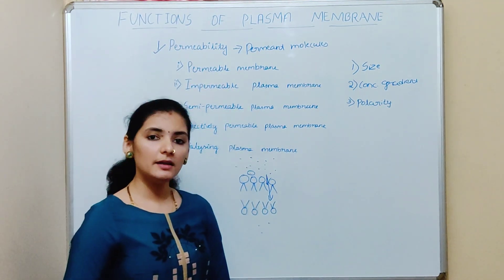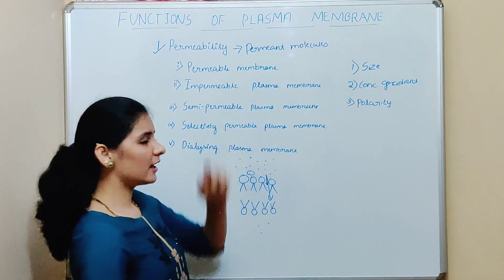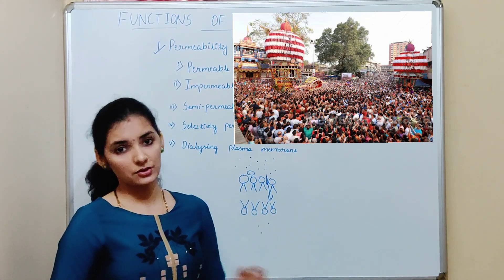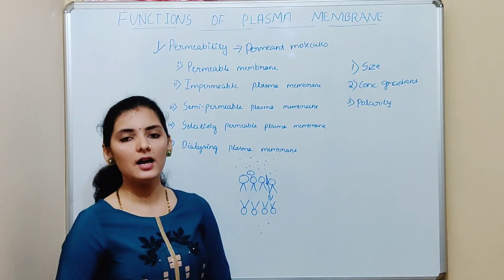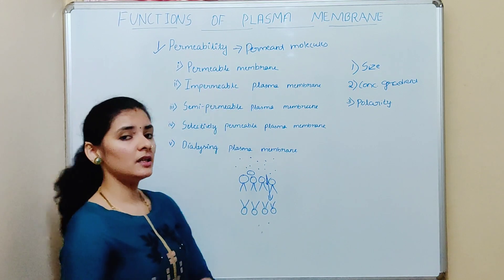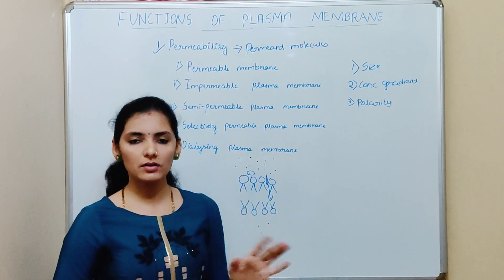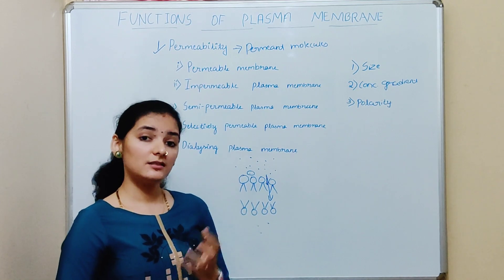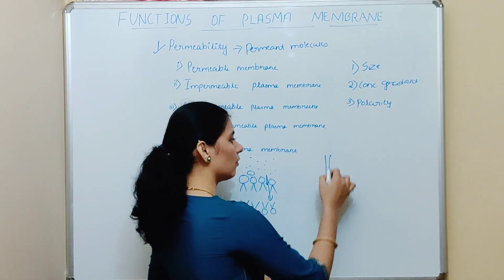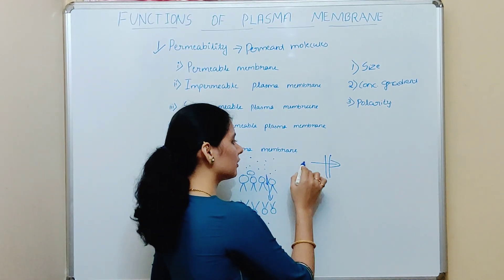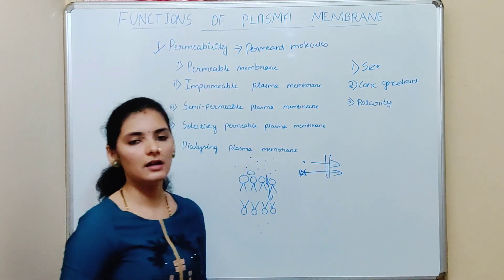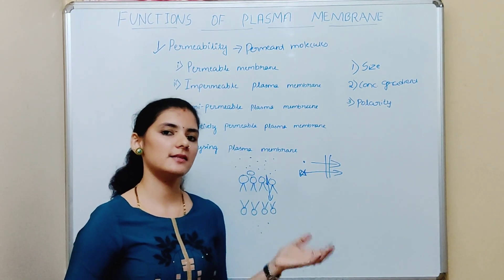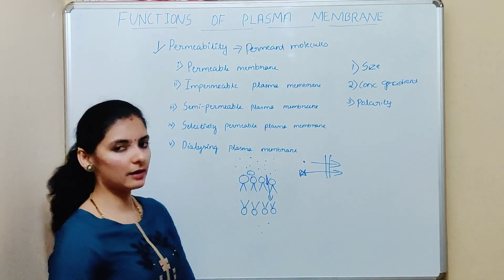The first type is the permeable membrane. As the name indicates, permeable means which permeates. This can be compared to a fair or festival at a temple — everyone can come and there is no restriction. Similarly, the permeable membrane allows everything to enter; there is no restriction. The best example of a permeable membrane is the cell wall of a plant cell, which allows every molecule to enter irrespective of its size — water, nutrients, gases — everything passes through it.